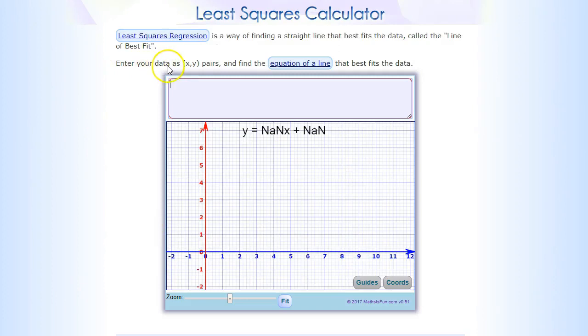It says enter your data as XY pairs and then it will find the equation of the line for you. So what do they mean by XY pairs?